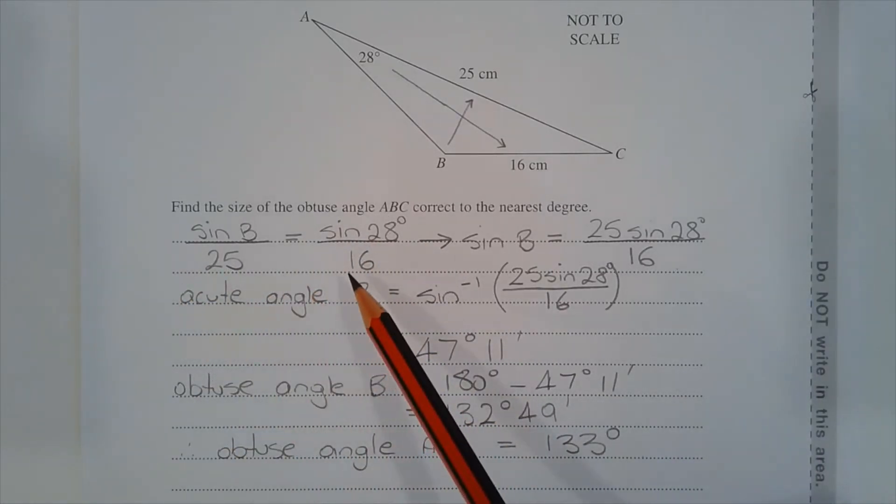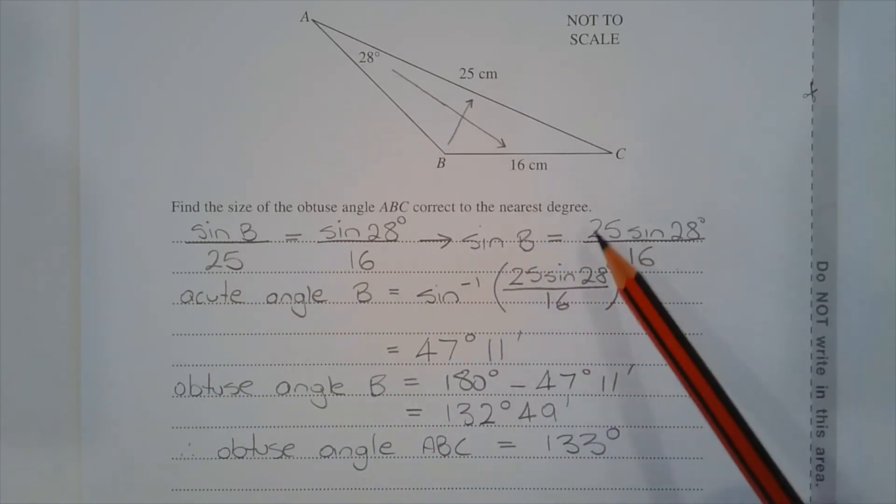Multiplying both sides by 25 to make sine of B the subject of the formula, we get sine of B is equal to 25 multiplied by sine of 28 degrees over 16.